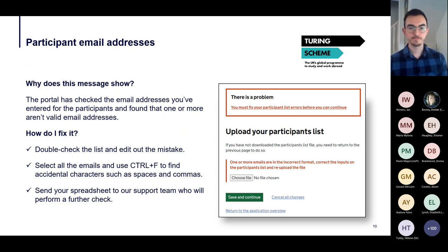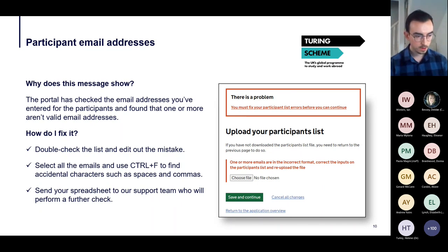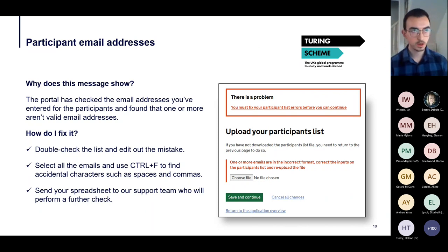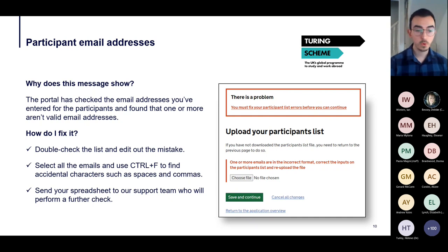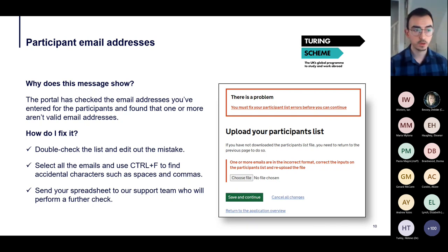Question: should we remove participants on the spreadsheet as a change request rather than as a payment request? Yes — if the number of participants is changing from the mobility group (say from 20 to 19), you need to start the change request process, change the number of participants, then download the spreadsheet and mark the relevant row for that mobility group for removal by selecting 'Yes', then upload the spreadsheet for that change to be processed.